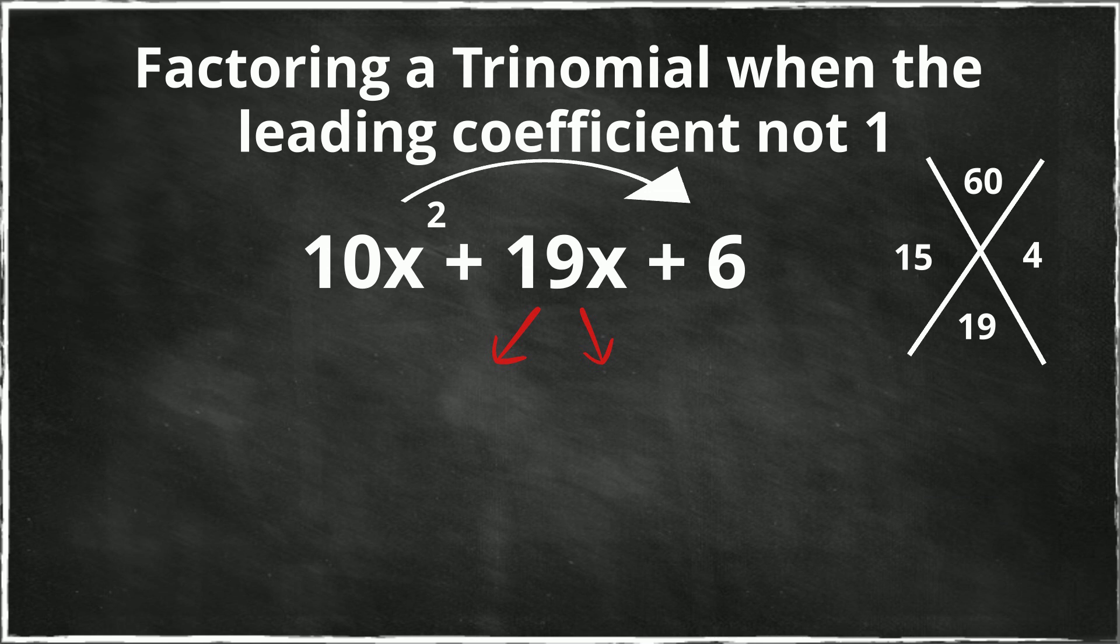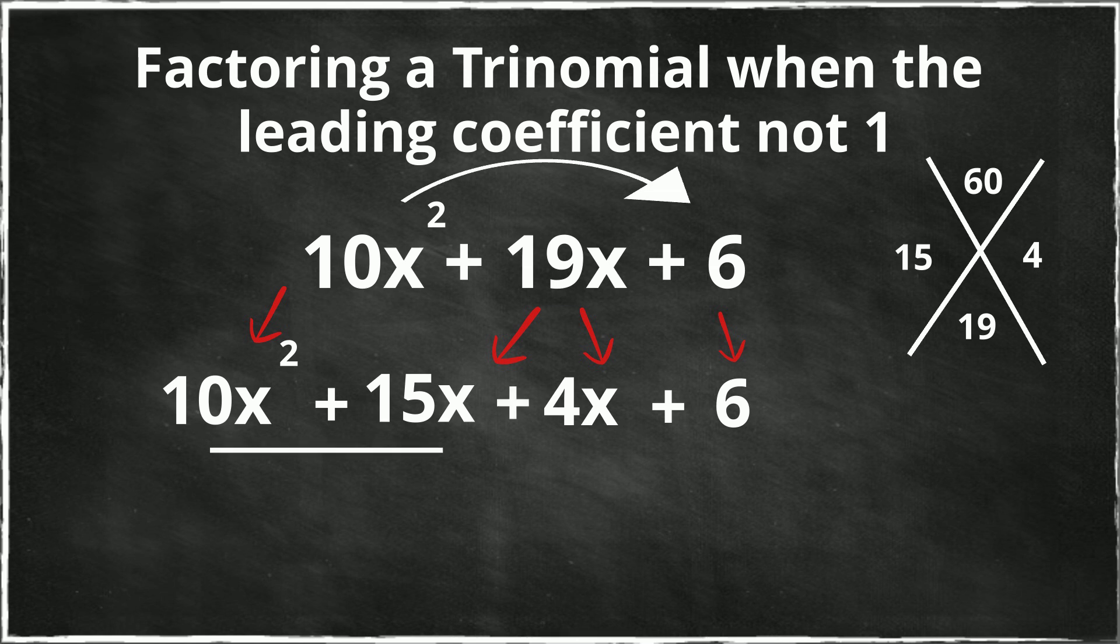So I'm going to bring down the 10x squared. And then I'm going to go ahead and write the 15 and add an x. So I have 10x squared plus 15x. Then I'm going to take the 4 and it becomes 4x and bring down the 6. Now I have two terms, 10x squared plus 15x plus 4x plus 6.